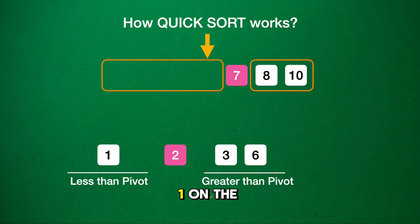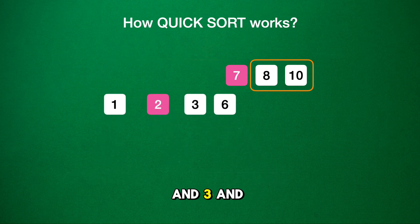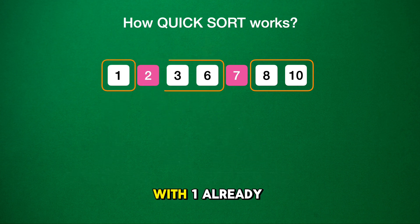The left side is sorted with 1 on the left of pivot 2, and 3 and 6 on the right. With 1 already in the correct place, we'll now sort the right side of 2, the numbers 3 and 6.